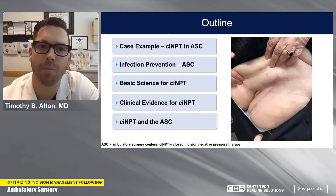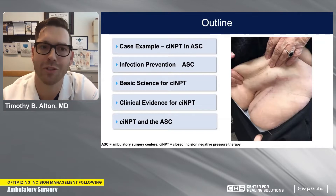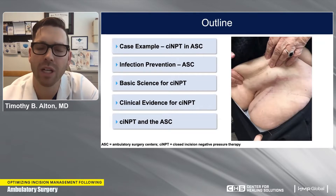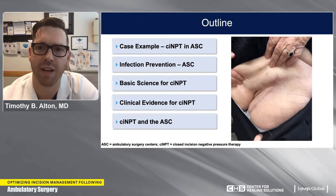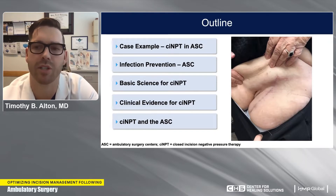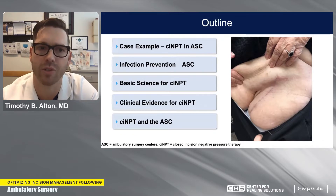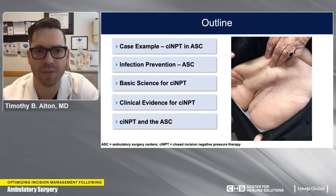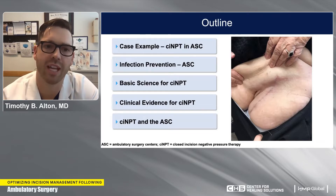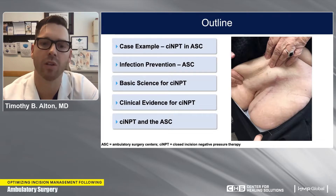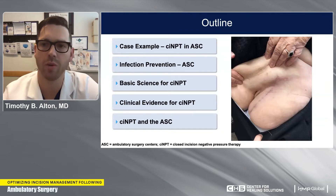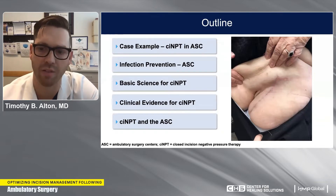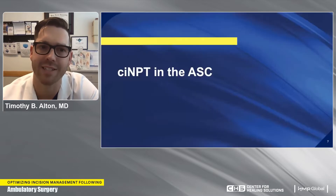We'll start out with a case example of closed incision negative pressure therapy in an ambulatory surgery setting. Then we'll go through what we do to prevent infections in hip and knee replacement patients specifically tailored to the ambulatory surgery center. I'll cover some basic science for closed incision negative pressure therapy and clinical evidence, and then conclude with the completion of that case performed at my ASC.